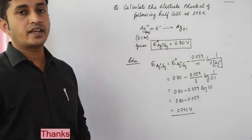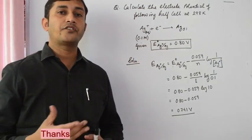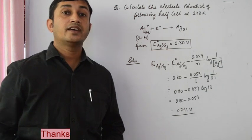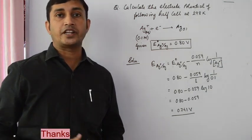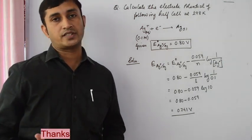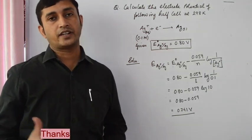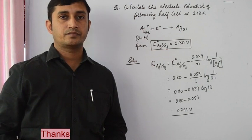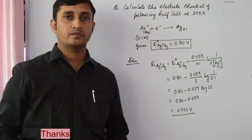In this way we can determine the electrode potential at any condition for different electrodes. In our next class we will see how the Nernst equation can be used to determine the cell potential of a cell for different concentrations and temperatures. Thank you.